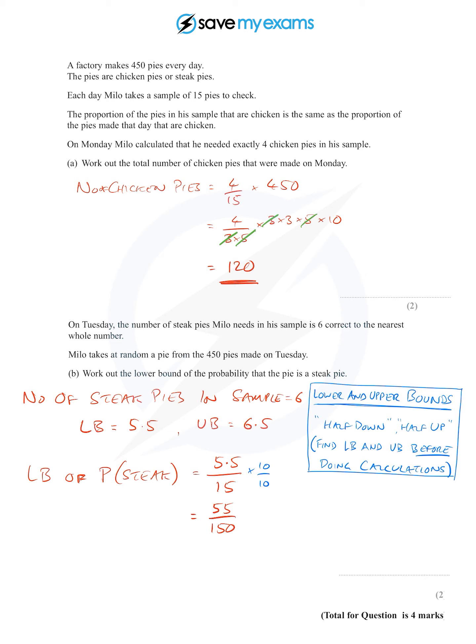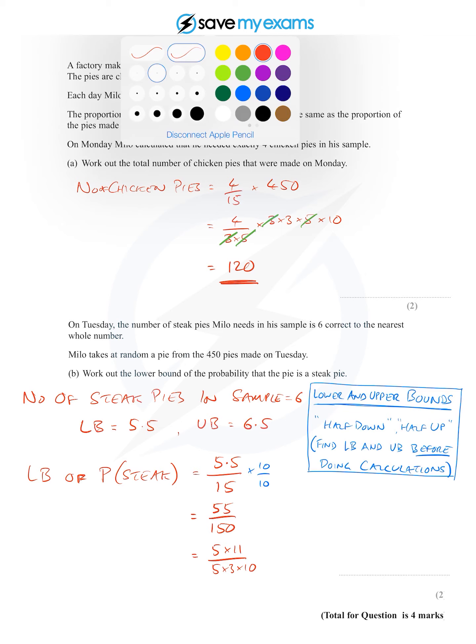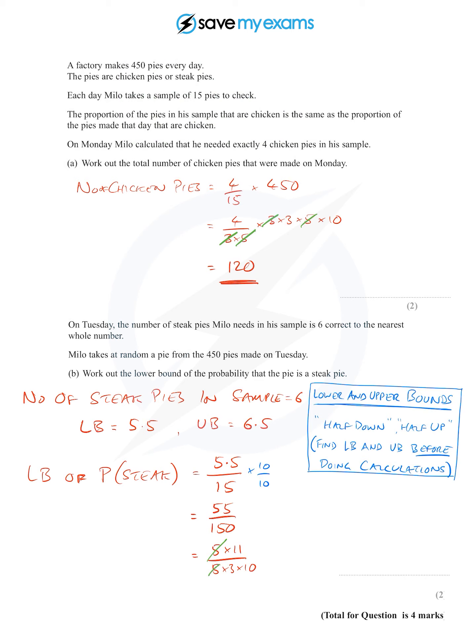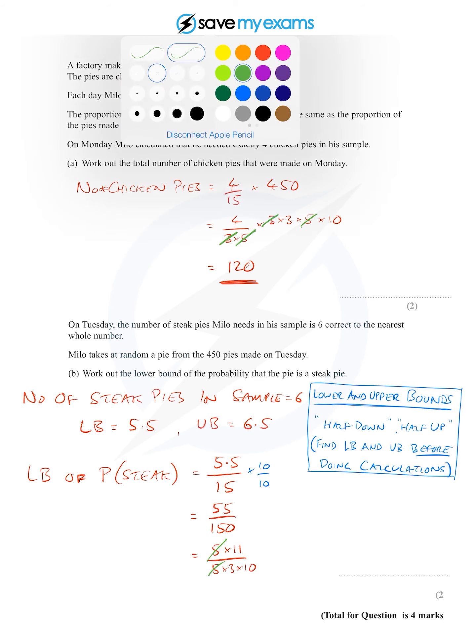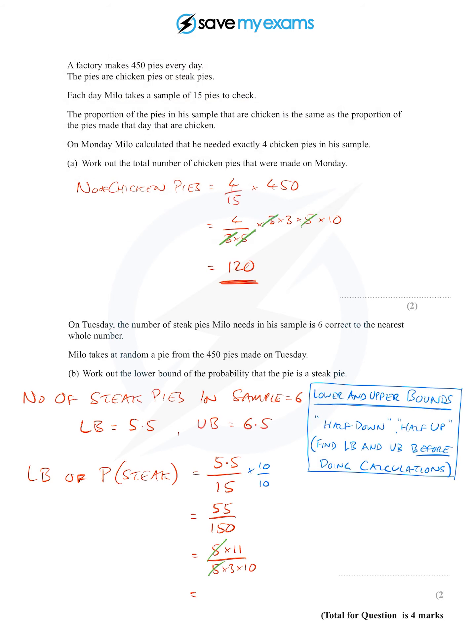Now I'm going to simplify that: 55 is 5 times 11, 150 is 5 times 3 times 10. With the green cancelling pen, I can get rid of one of the fives top and bottom, which gives me 11 over 30. They'll probably accept 55 over 150 as well.